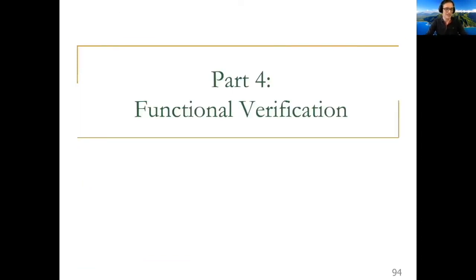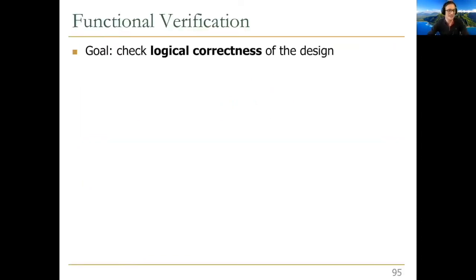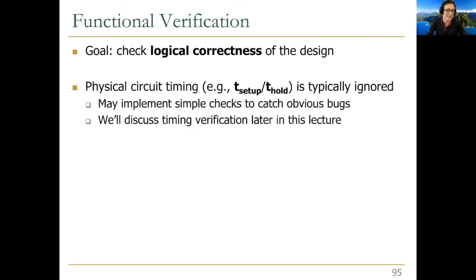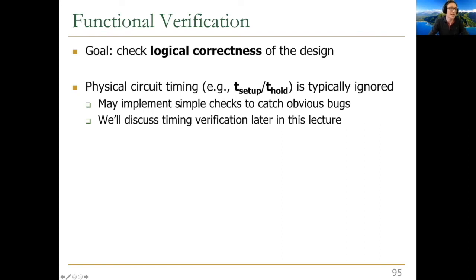Let's talk about functional verification, because you're going to do a lot of that in this course. The goal is to check functional or logical correctness of the design — does this circuit implement the Boolean function it's supposed to implement? In this verification, we usually ignore physical circuit timing like t_setup and t_hold, because you don't want to mix concerns at the conceptual level. You may implement simple checks to catch obvious bugs, but we'll discuss timing verification later.